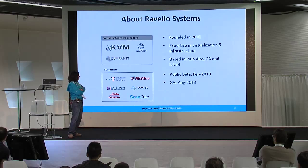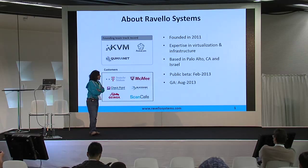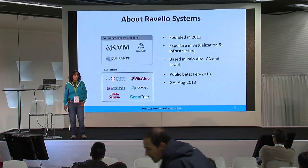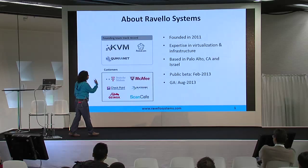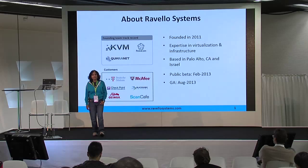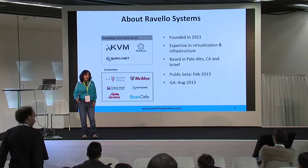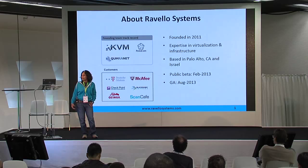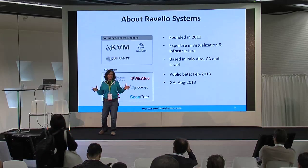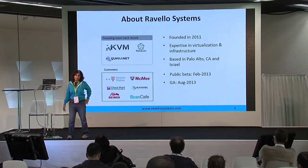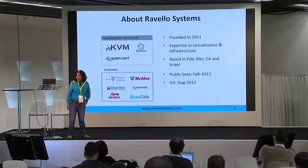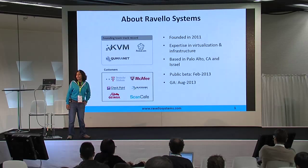Just to give you all a little background about who we are and what we do: we are the same founding team that built KVM hypervisor. I'm sure all of you are familiar with KVM. Our new platform, the Ravelo platform, is actually a brand new built-from-scratch hypervisor platform which runs in nested mode on top of public clouds like AWS and Google. There are really great things you can do with it once you've got a hypervisor running in nested mode — including building OpenStack lab environments and running them on top of AWS and Google Cloud.